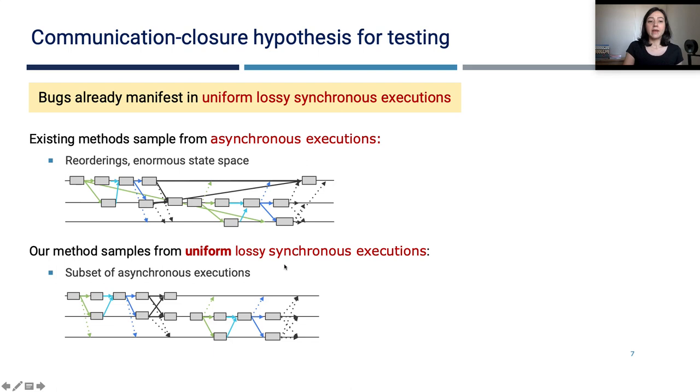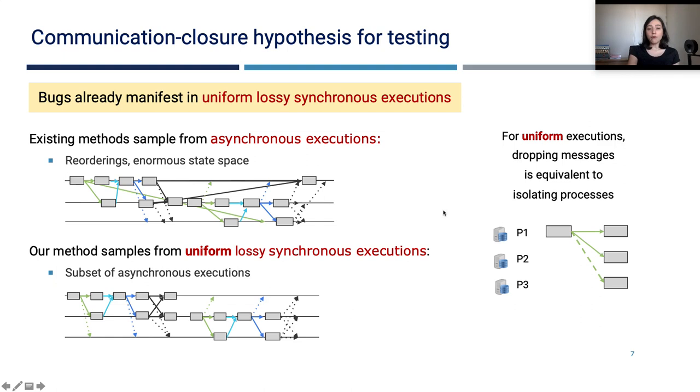Here we also add the uniformity component, which restricts the choice of how we can drop the messages in an execution. In uniform executions, dropping messages is equivalent to isolating processes. Consider the round here. Dropping the message sent to P3 is equivalent to isolating the process P3 in this round of execution.